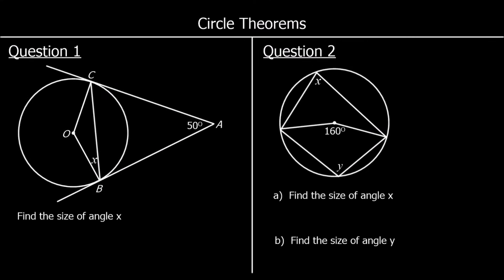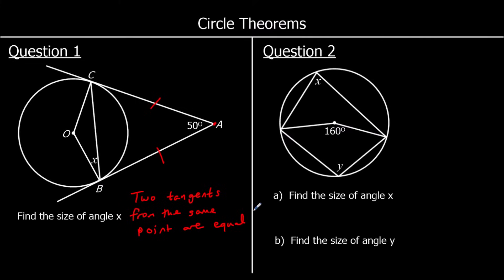Let's look at some questions. Question one: find the size of angle x. We've been given angle BAC as 50 degrees, and we can see we've got two tangents coming from the same point A — tangent AB and tangent AC. Two tangents from the same point are equal, which means triangle ABC is an isosceles triangle.